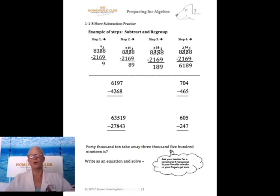As the addition page, this is subtraction. So we're regrouping or borrowing. From a 10 to a 1, from a 100 to a 10, and a 1000 to a 100. So it's all backwards and borrowing. Again, bottom question here to read aloud: 40,010 take away 3,519.